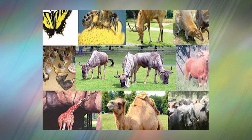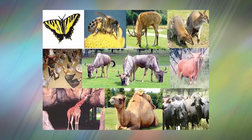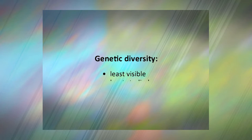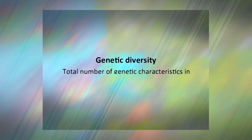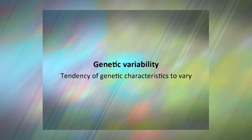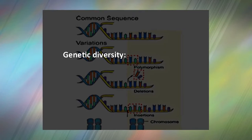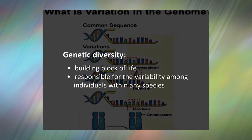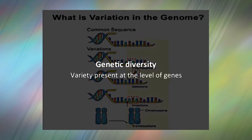First, genetic diversity. Genetic diversity refers to the differences in genetic makeup between distinct species as well as the genetic variation within a single species. This is the least visible and arguably least studied level of biological diversity. It refers to the total number of genetic characteristics in the genetic makeup of a species, and is distinguished from genetic variability, which describes the tendency of genetic characteristics to vary. Genetic diversity is the building block of life and is responsible for variability among individuals within any species based on variations in genes — it is the variety present at the level of genes.